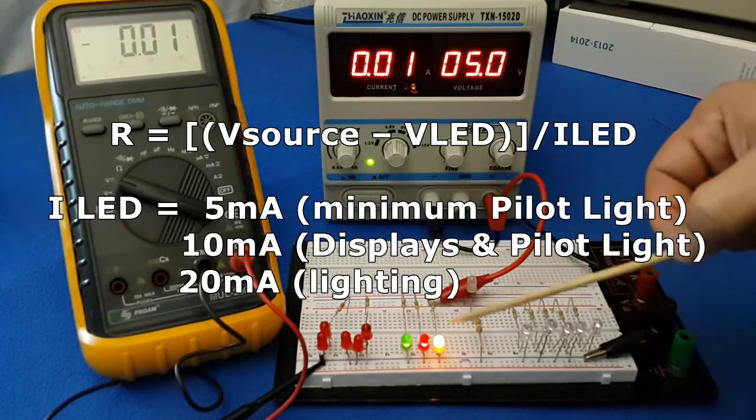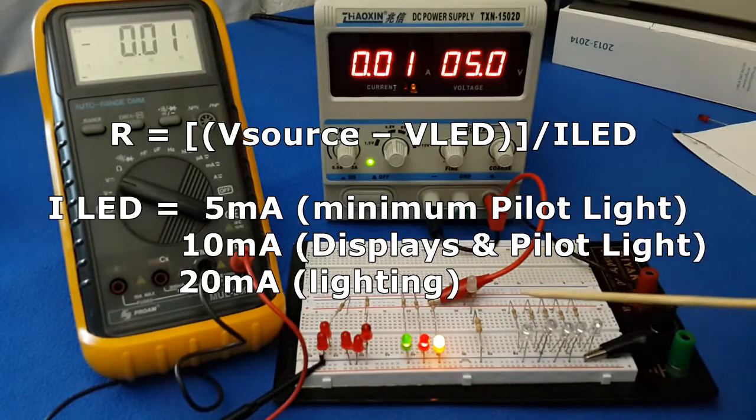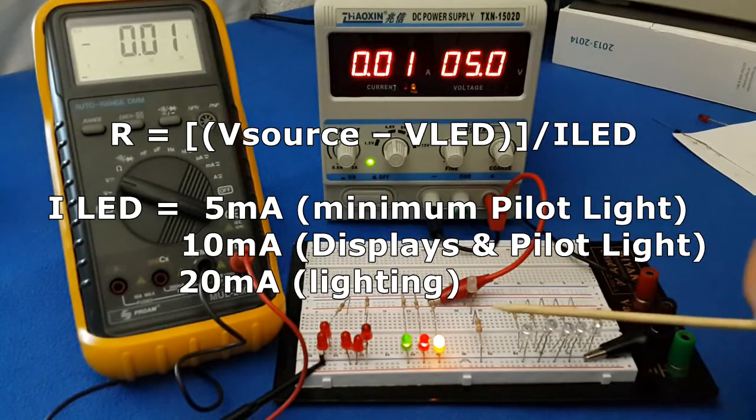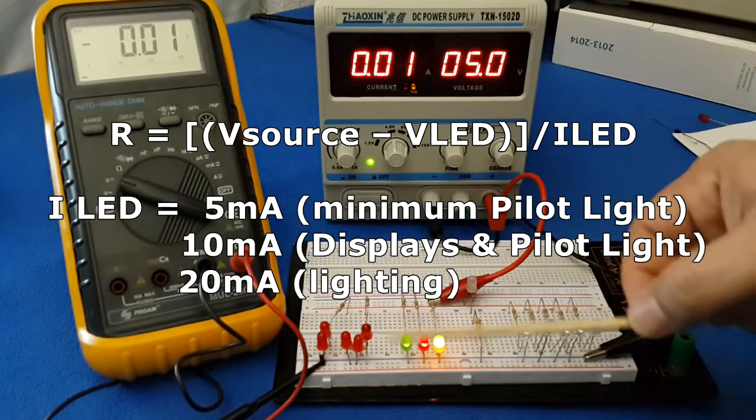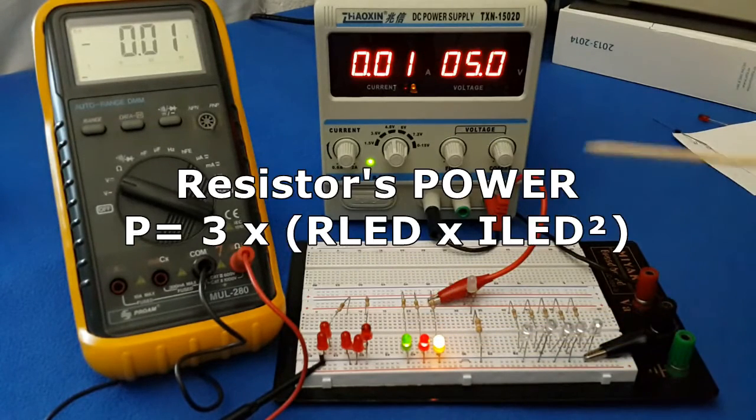Twenty milliampere is good enough to make it very bright. Don't go for the 40 milliampere because you will kill it very soon. And you want your LED to get a longer life again.